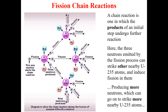From these neutrons, a chain reaction occurs. A chain reaction is one in which the products of an initial step undergo further reactions. In this initial step we have three neutrons, and these three neutrons are accelerated toward further uranium nuclei.